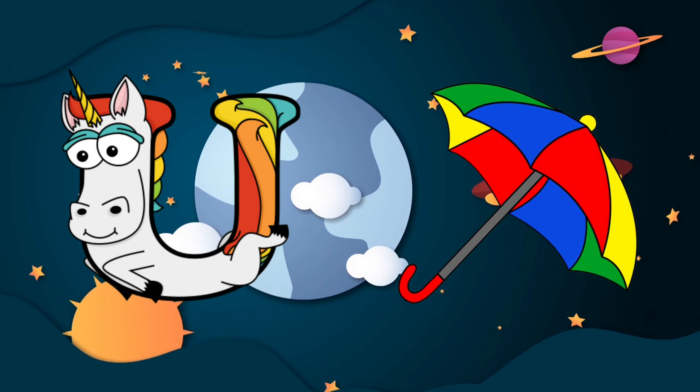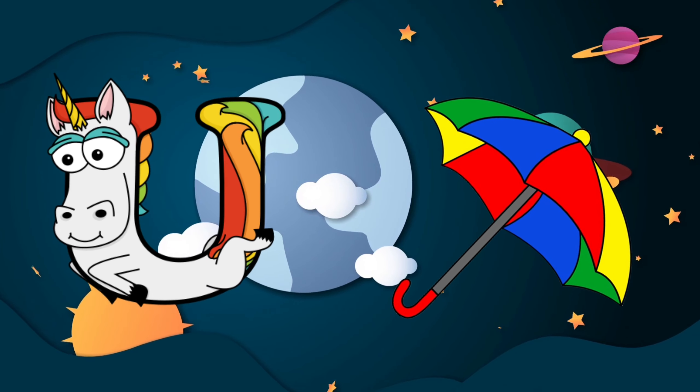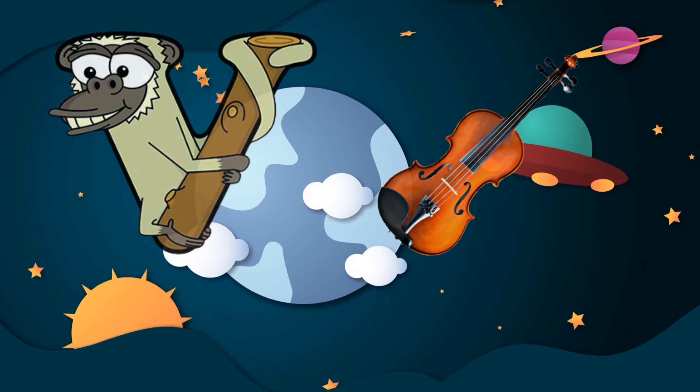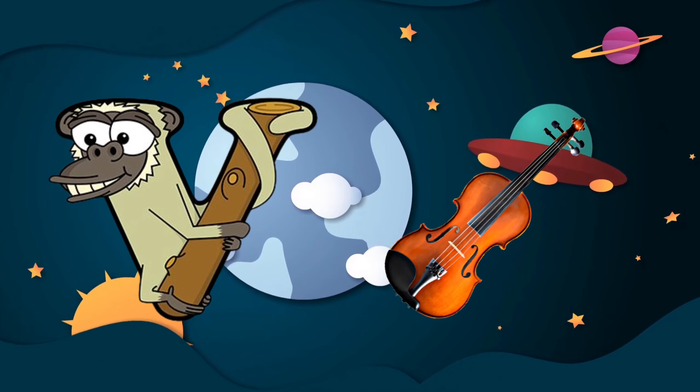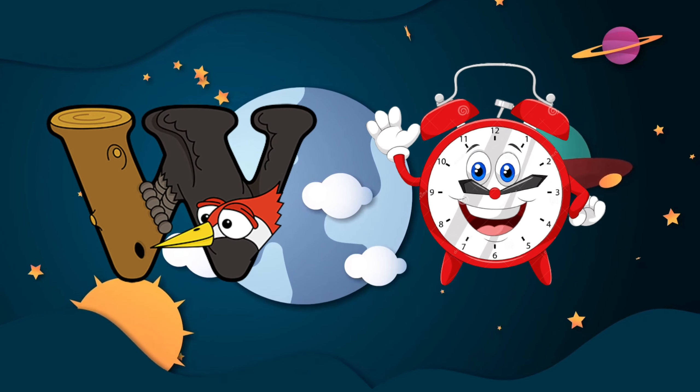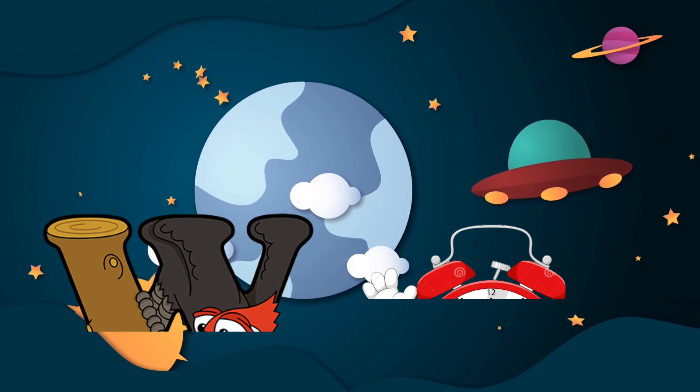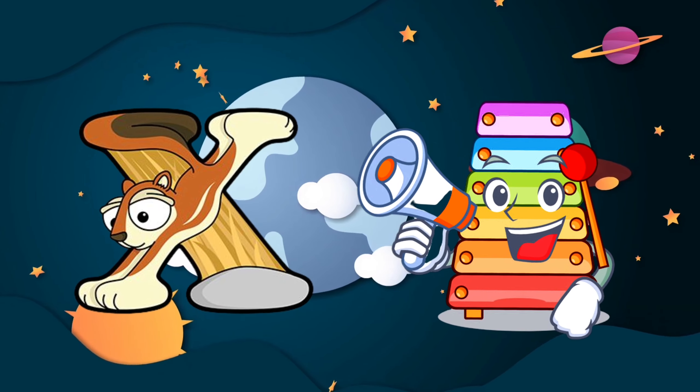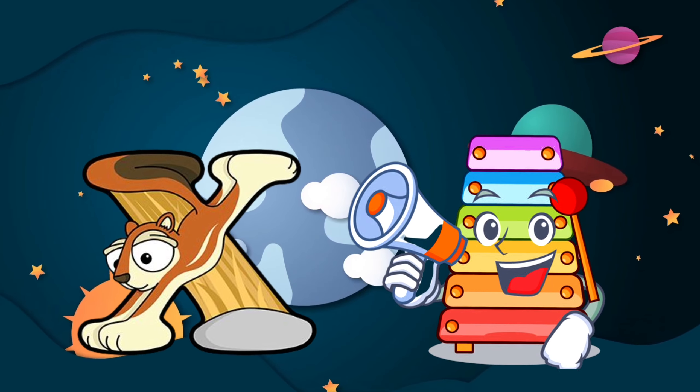U is for umbrella, u-u-u-umbrella. V is for violin, v-v-violin. W is for watch, w-w-watch. X is for xylophone, z-z-xylophone.